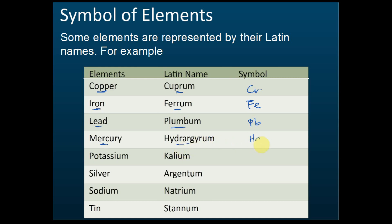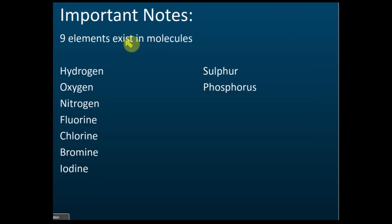Potassium — the Latin name is kalium — so the symbol is K. Silver — the Latin name is argentum — so the symbol is Ag. Sodium — the Latin name is natrium — so the symbol is Na. Tin — the Latin name is stannum — so the symbol is Sn. You must memorize all of these.